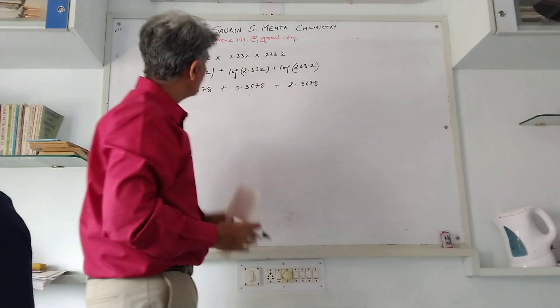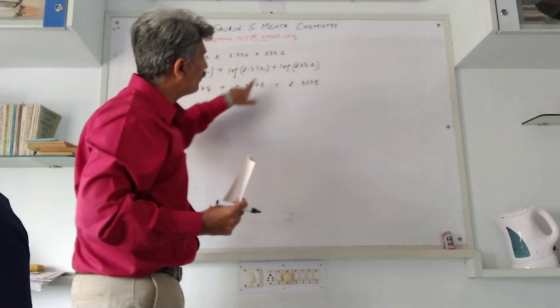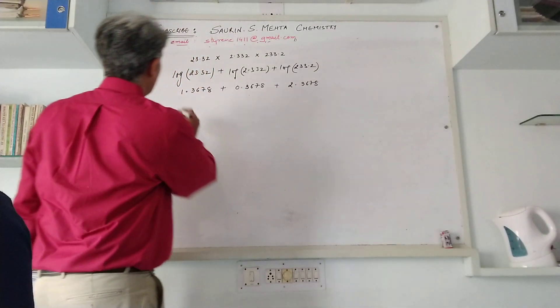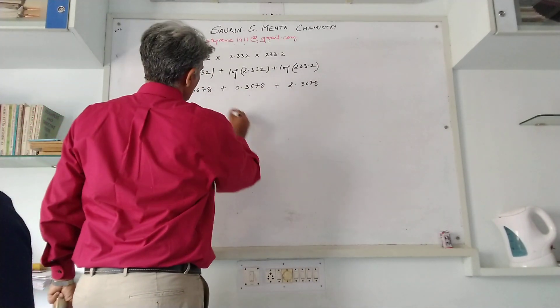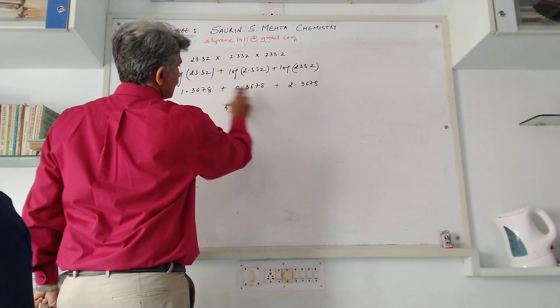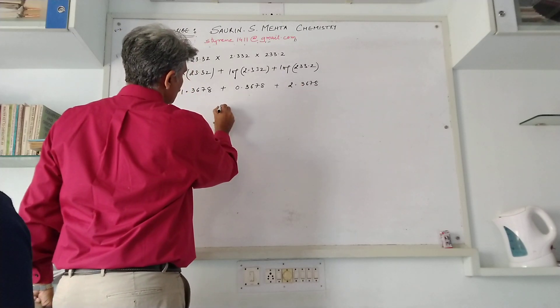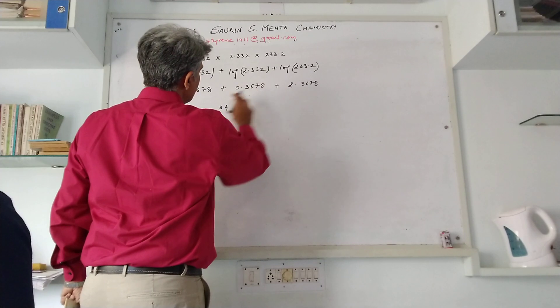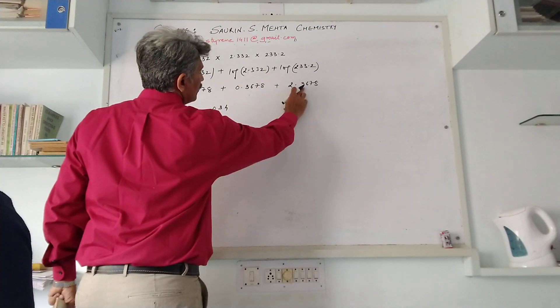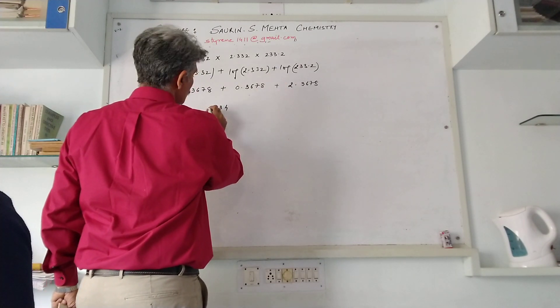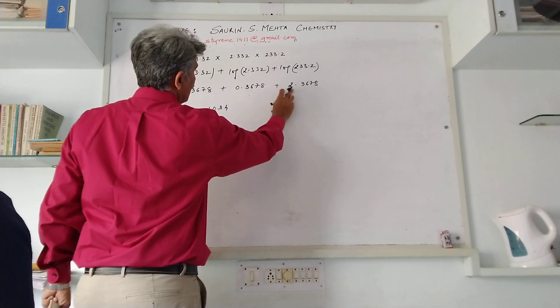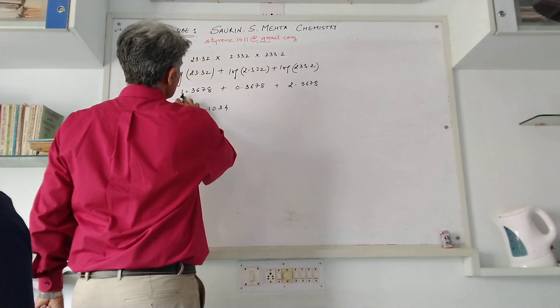This total comes to 1 point, 0 point, and 2 point. We'll sum up all three values. 8 threes are 24, 7 threes are 21 and 2 is 23, 6 threes are 18 and 2 is 20, and 3, 3, 3 is 9 and 2 is 11. One added, 2 plus 0 plus 1 and 1, that comes to 4.1034. This is your log value.